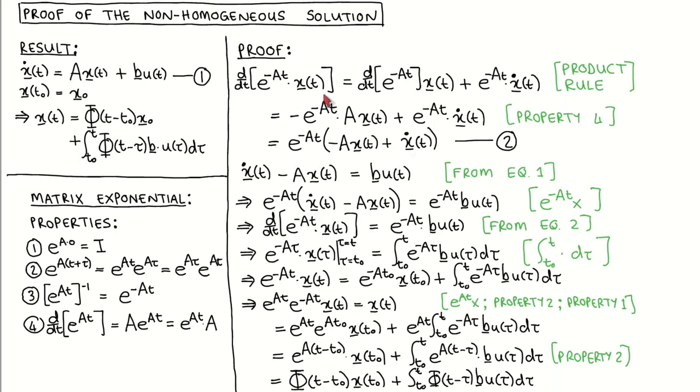We now jump back to the non-homogeneous state equation and we bring Ax to the left-hand side. We then left multiply with the matrix exponential of minus At, which makes the left-hand side equal to the right-hand side of the intermediate result. We now replace this with the left-hand side of the intermediate result, which gives us this line.